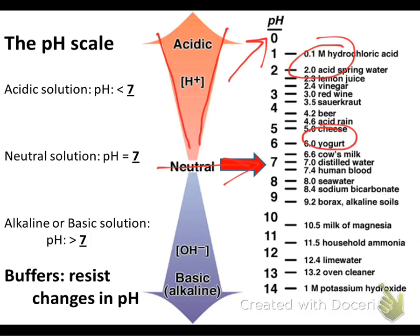Human blood is at about 7.4, so your blood is not neutral — it's slightly alkaline, or the other word for that is slightly basic. You'll hear both words used: alkaline or basic, same thing. Things around your house that have a higher pH — that is, they're more basic — would be milk of magnesia. Why would you take milk of magnesia? You've got heartburn or stomach acid, and you're trying to neutralize it. So you take something very alkaline or very basic to counterbalance that acidity.